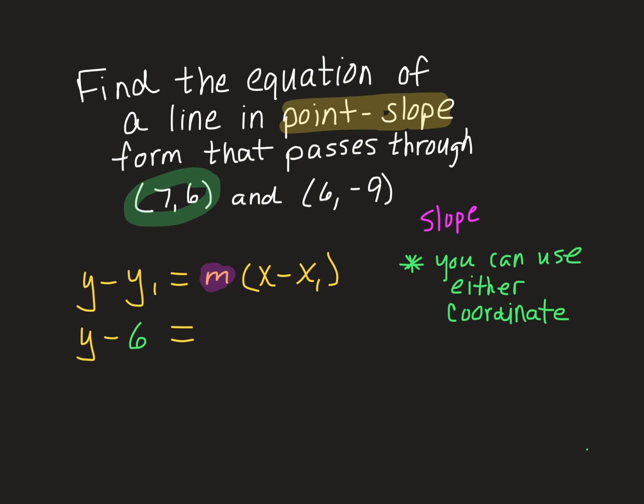Now, I'm still stuck with this m. I don't know exactly what my value for m is yet, but I'm going to go ahead and do the x. And then I'm going to replace the x₁ with the 7 because that is the x coordinate that is given to me up here.